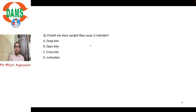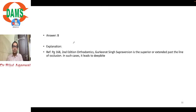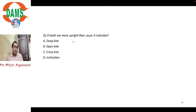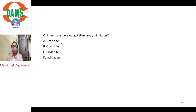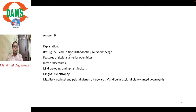If teeth are more upright than usual, it indicates open bite. This is nature's compensation — when anterior teeth cannot meet in open bite, they become more upright. Features of anterior open bite include mild crowding, upper upright incisors, gingival hypertrophy, maxillary occlusal and palatal plane tilted upwards, and mandibular occlusal plane tilted down.